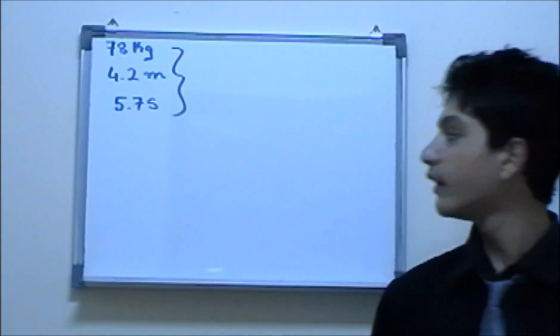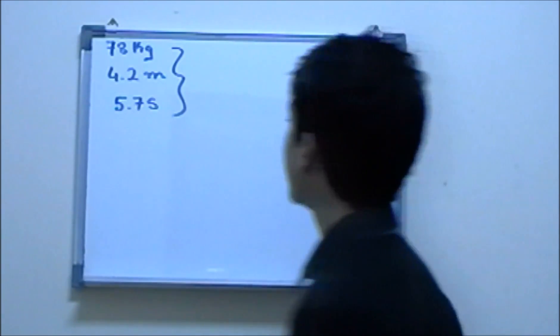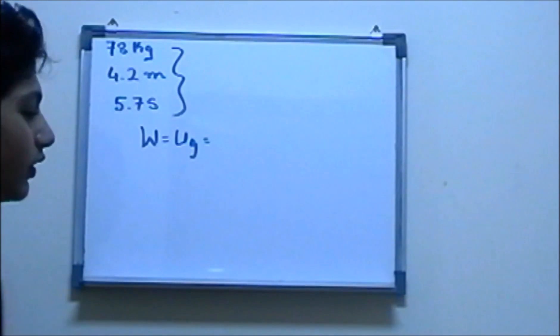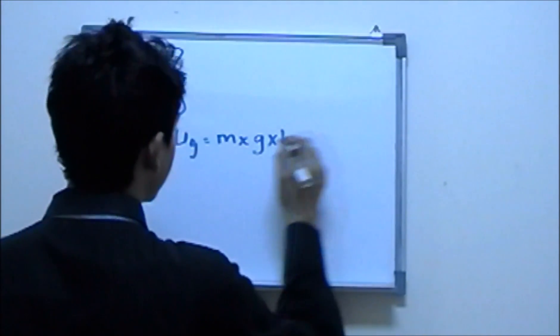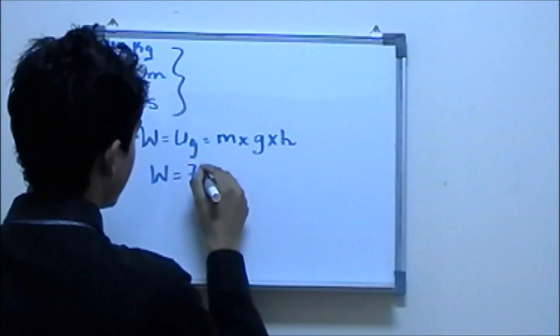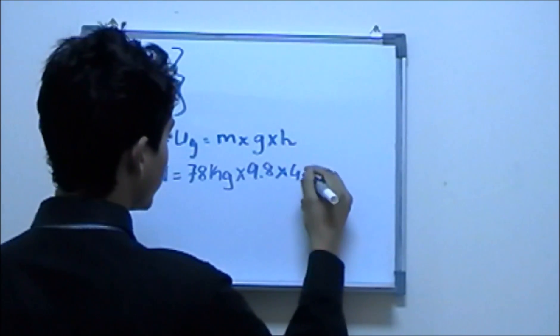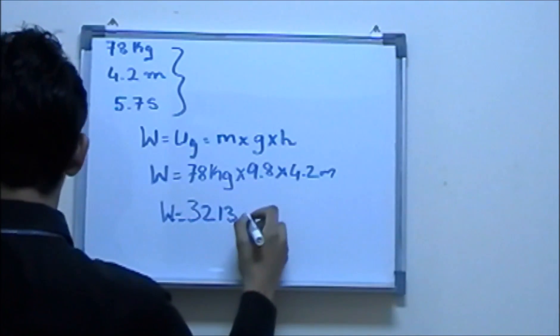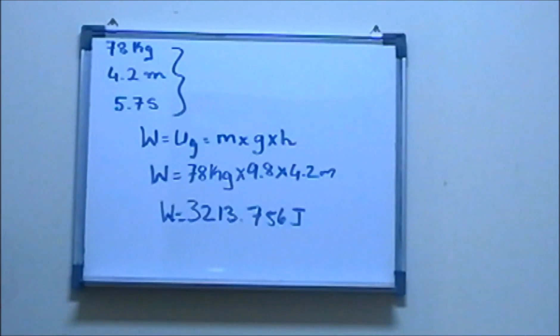It turns out that we don't need seconds or time over here because we are finding how much work does he do. And like we talked before, work is equal to UG which is gravitational potential energy, and gravitational potential energy is equal to mass times gravity times height. So, mass is 78 kg, gravity we know is 9.8, the height is 4.2 meters. The work is equal to 3213.756 joules. And this is how we arrive at the answer of work.